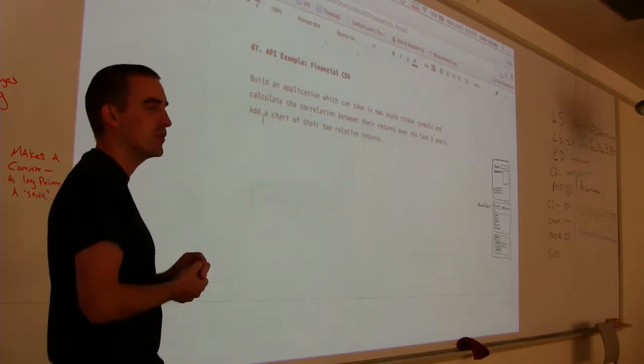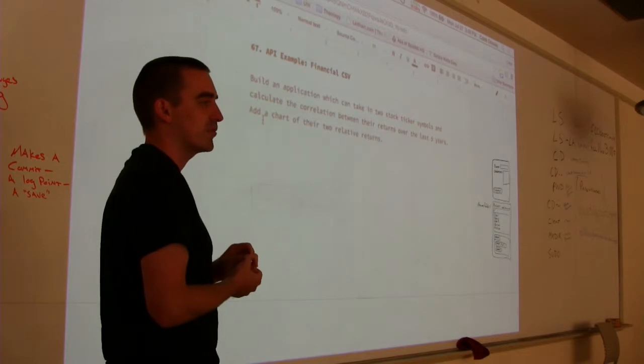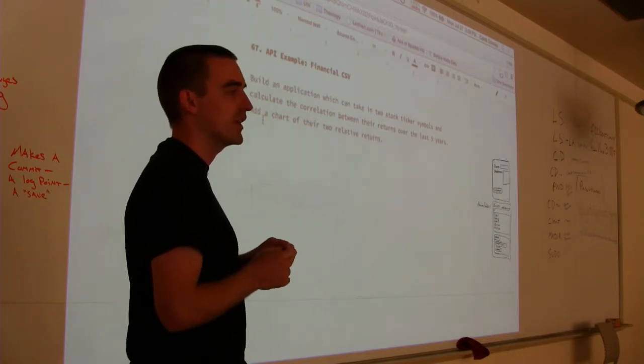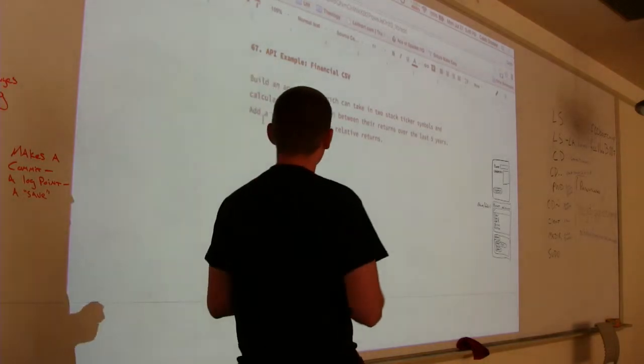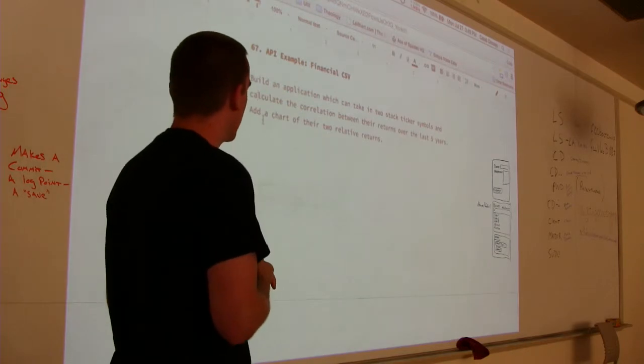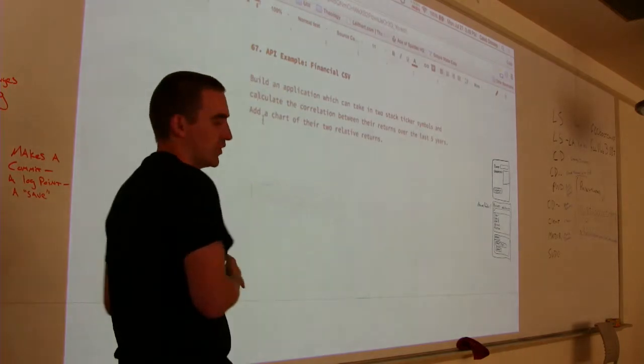Google sort of gave up on this game a while ago. They used to have a, you can get stock prices and stuff, but I think they deprecated and killed that API. Google Finance. You can't do that anymore. But we can use Yahoo, which has this long ago abandoned API, which seems to work.